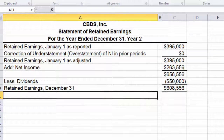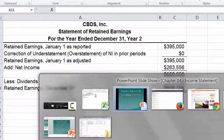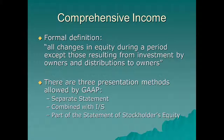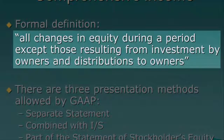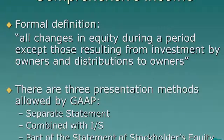Before we end this segment, I want to talk about one more thing: comprehensive income. We talked about it as one of the elements of GAAP back in our discussion of the conceptual framework. The formal definition is: all changes in equity during a period except those resulting from investment by owners and distributions to owners. The idea is that there are things that change our asset values that we have no control over, and we don't want to put them in net income because the company really didn't make any decisions that caused the change. But we still have to show that the assets changed in value — that's where comprehensive income comes in.